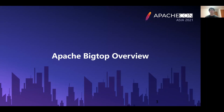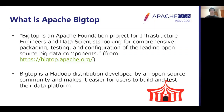First, I'd like to show you what Apache Big Top is with its history. According to the official website, Big Top is an Apache Software Foundation project for comprehensive packaging, testing, and configuration of the leading open source Big Data components. If I put it in simpler words, Big Top is a Hadoop distribution developed by the open source community, and it makes it easier to build and test a Hadoop-centric data platform.